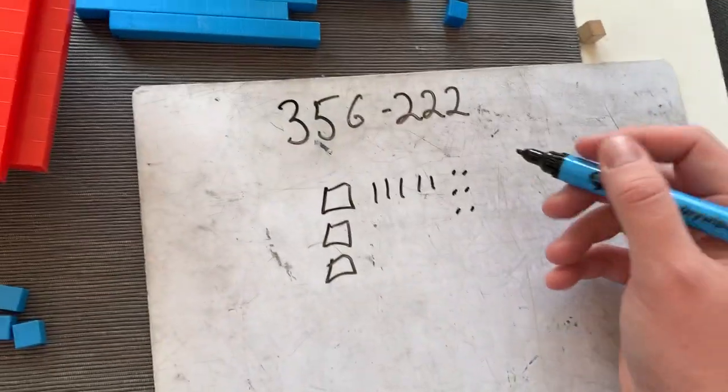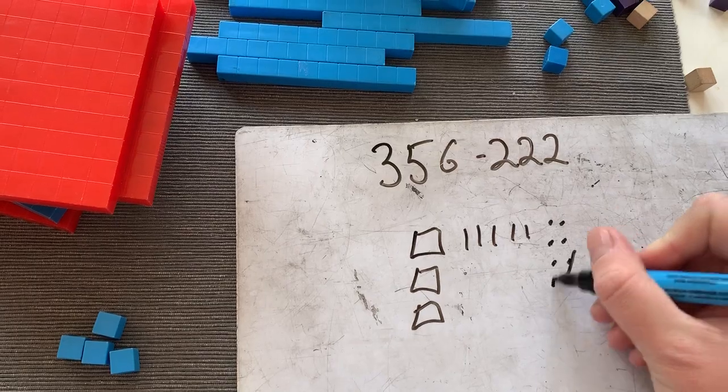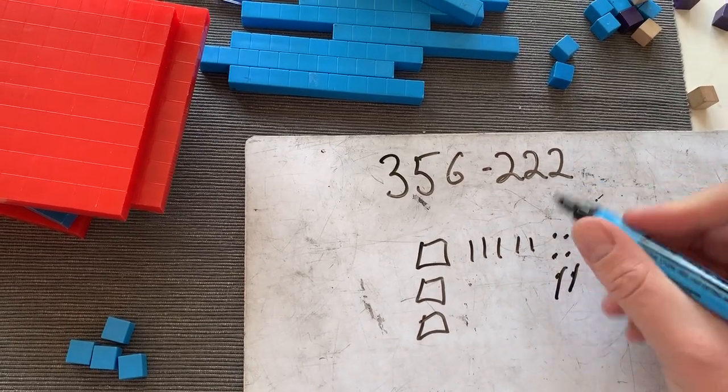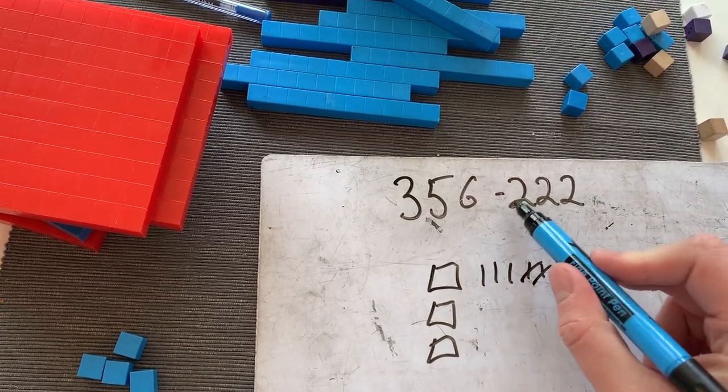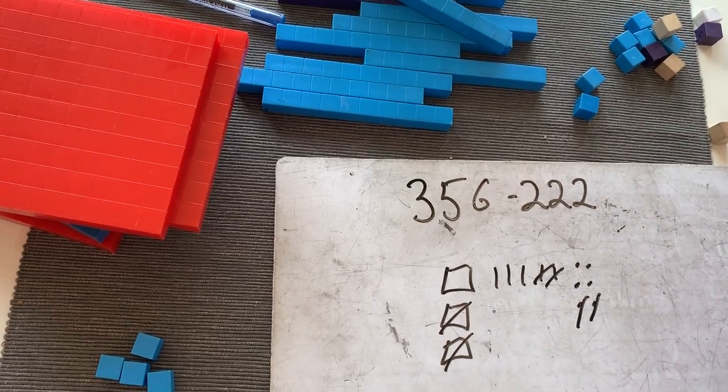Taking away 222. We always start with the ones, except for division. So two ones, two tens, and two hundreds, which leaves me at 134.